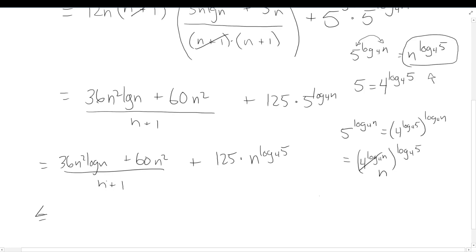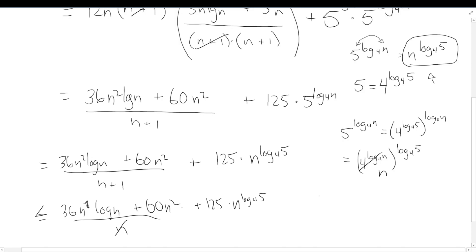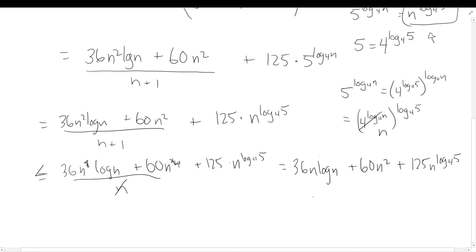Instead of eliminating n+1 entirely, I'll just get rid of the +1, leaving n in the denominator. Making the denominator smaller makes the whole term bigger, so this is a valid upper bound. So we have 36n² log n + 60n² all over n, plus the extra term. The n cancels with n², giving us 36n log n + 60n. I also caught a mistake — the squared should have cancelled out already.